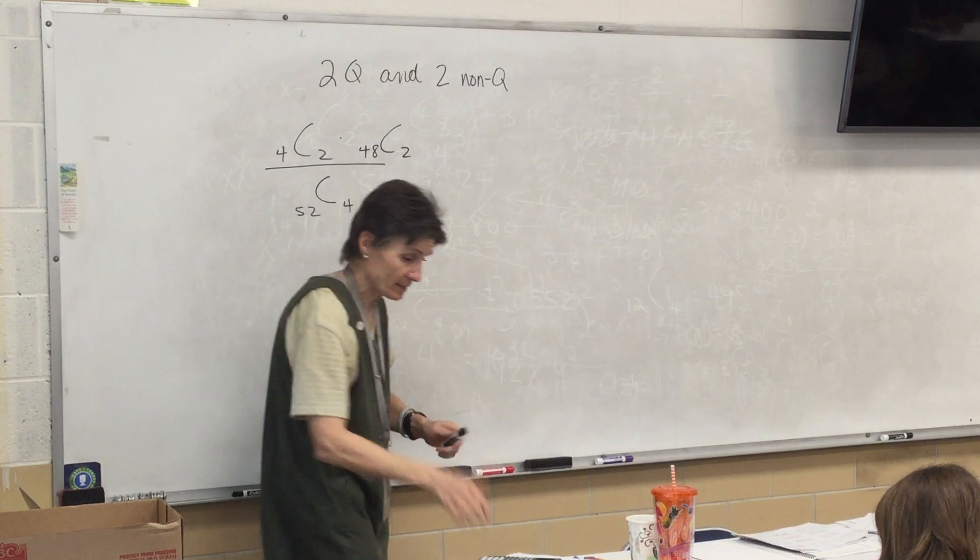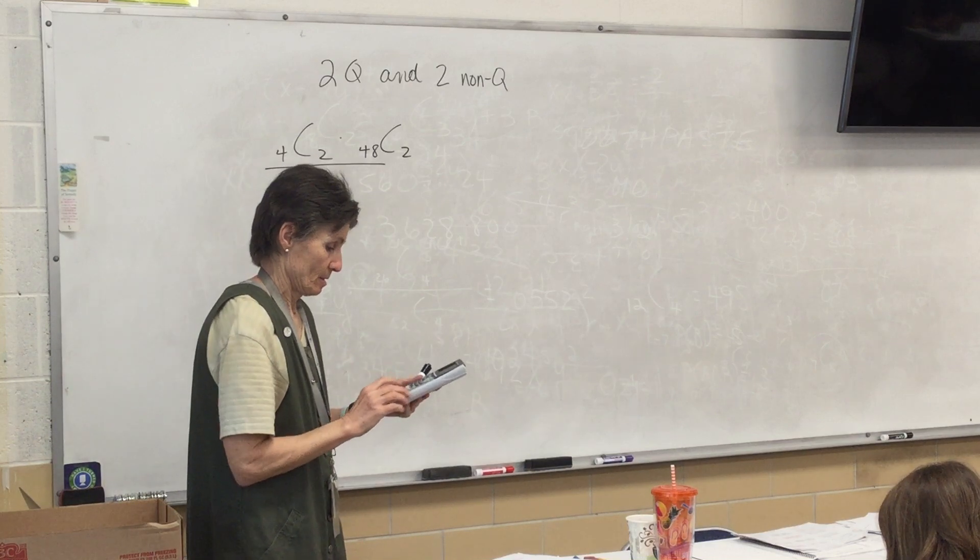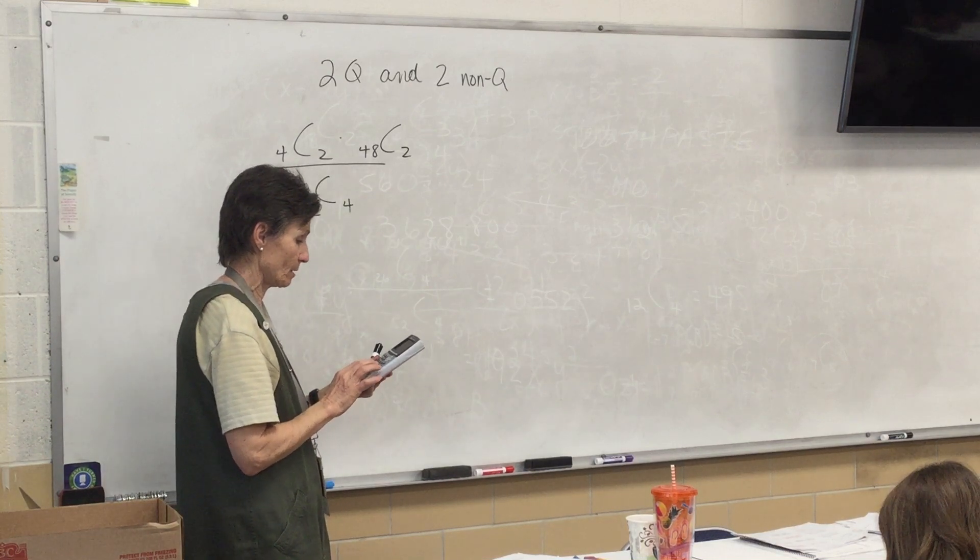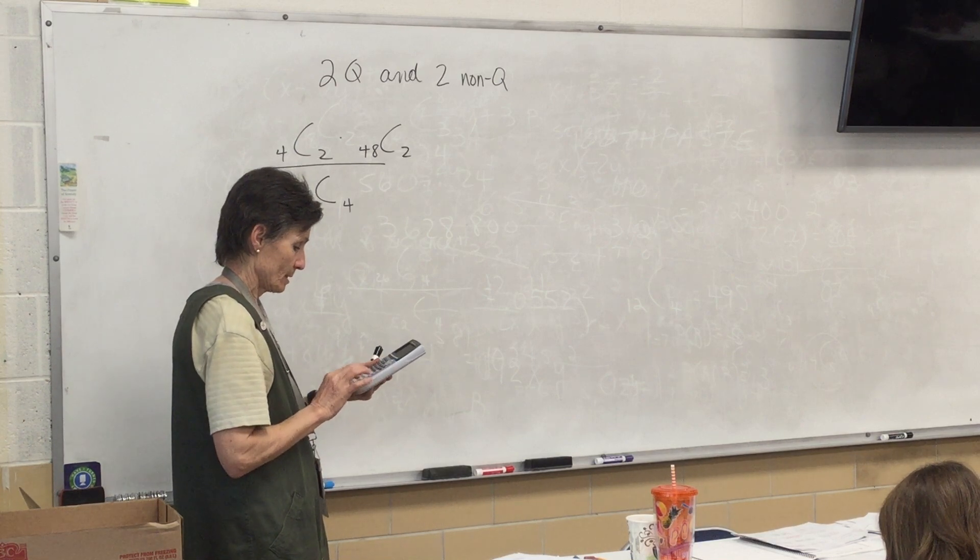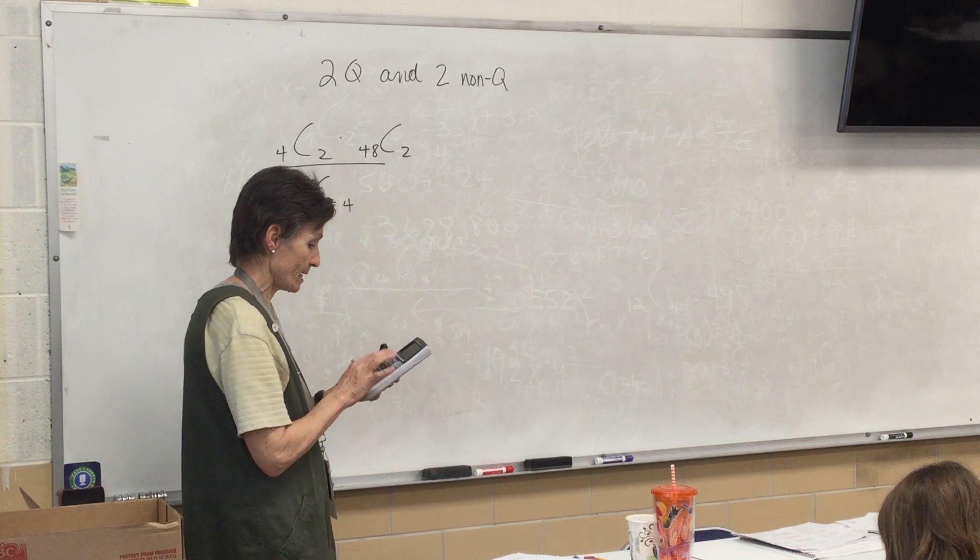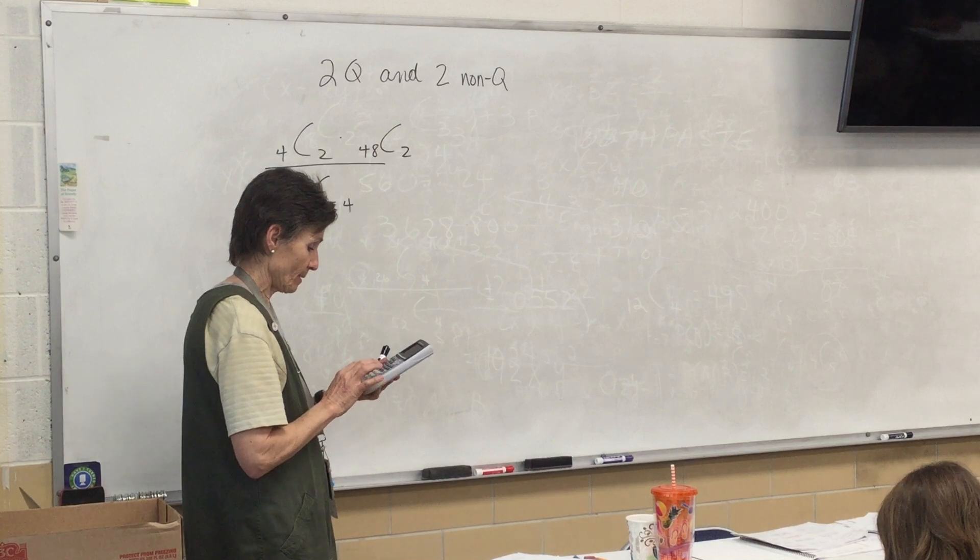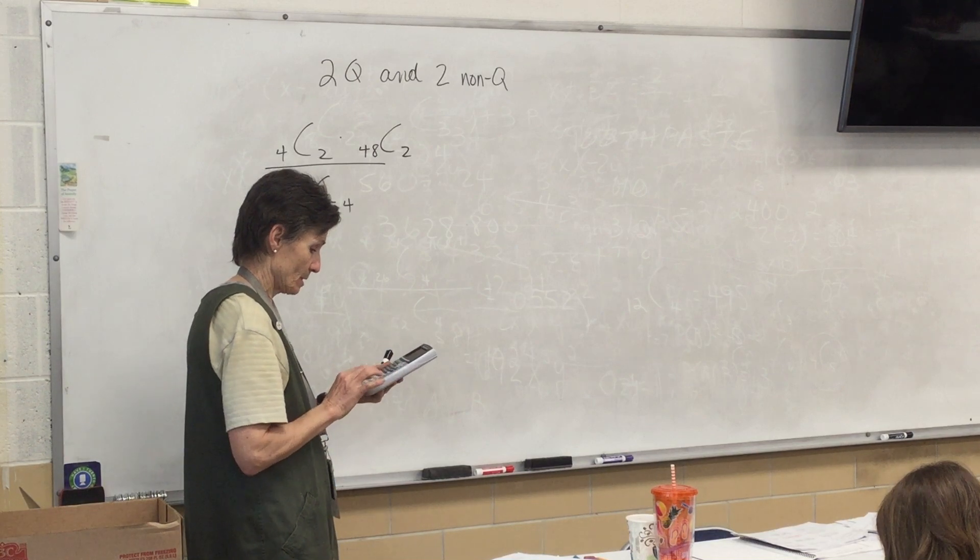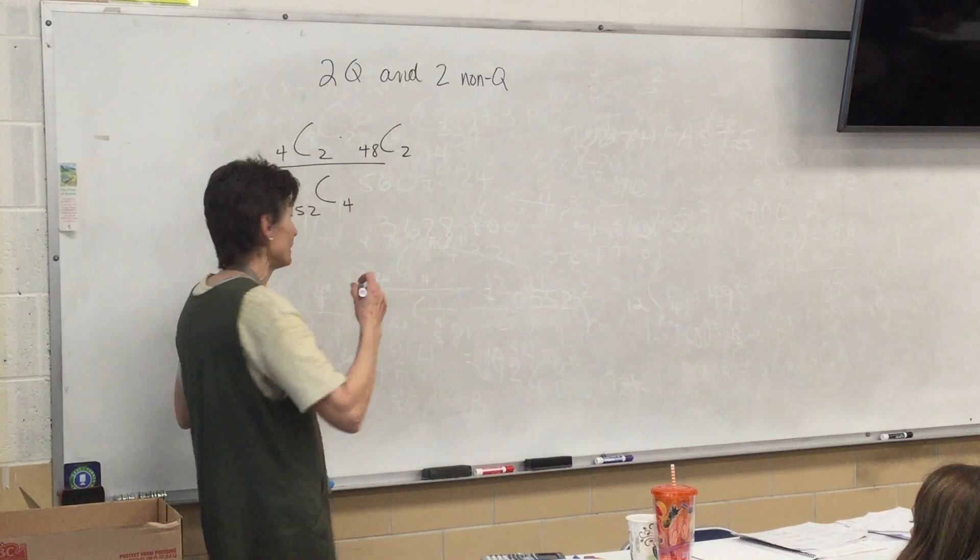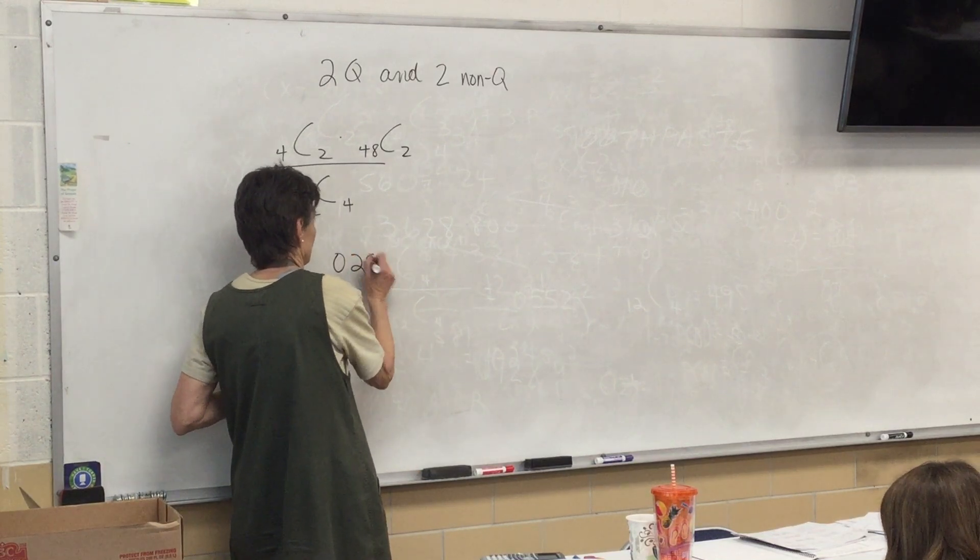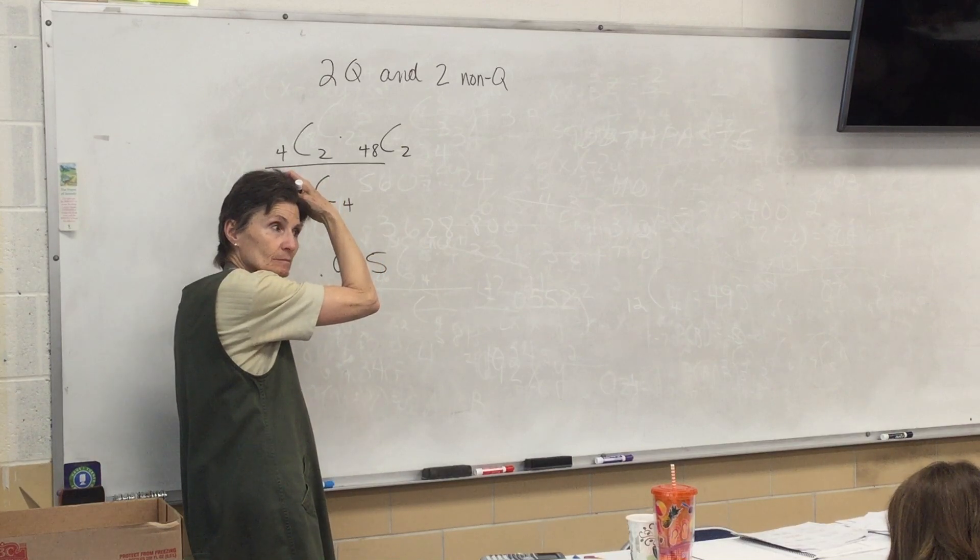Let's see what the answer is. 4C2 times 48C2 divided by 52C4. I got .025 basically.